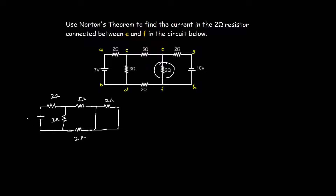So we have seven volts here and we are not considering the ten-volt source in this case. Looking at the direction of the voltage source and where the positive terminal is, I will consider IN1 — which is Norton's current when the seven-volt source is acting alone — to flow in this direction. The two-ohm resistor here is short-circuited, so current will not flow through it and I will not include it in the calculations.